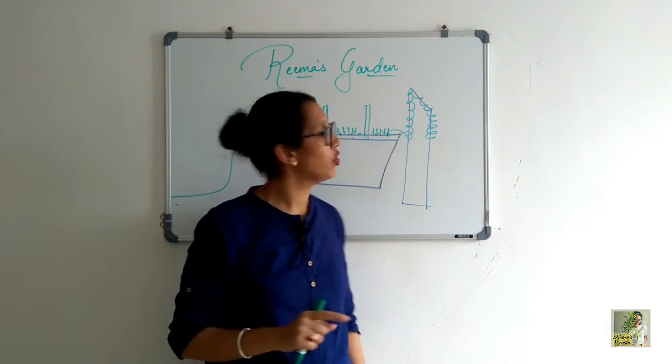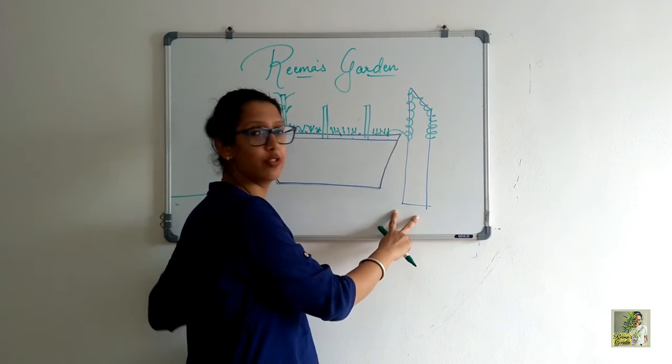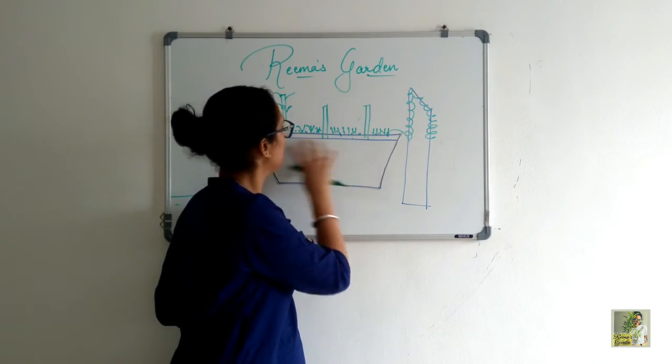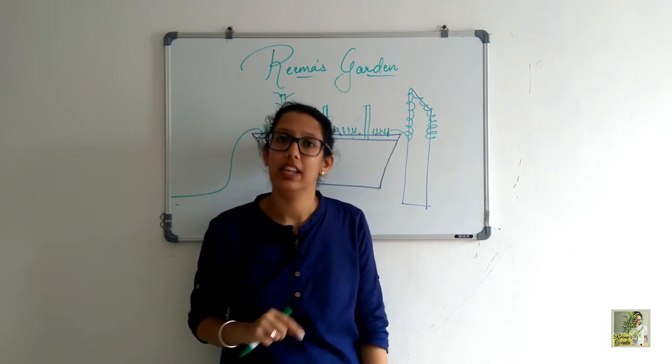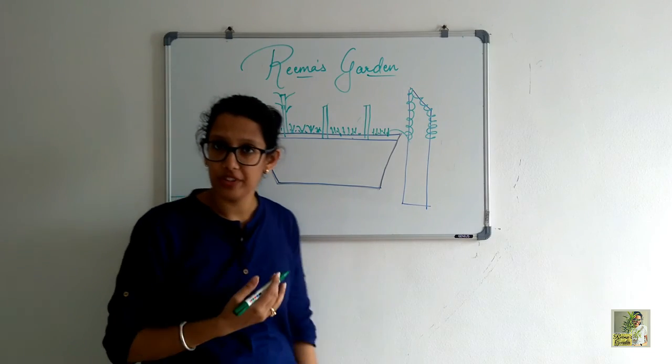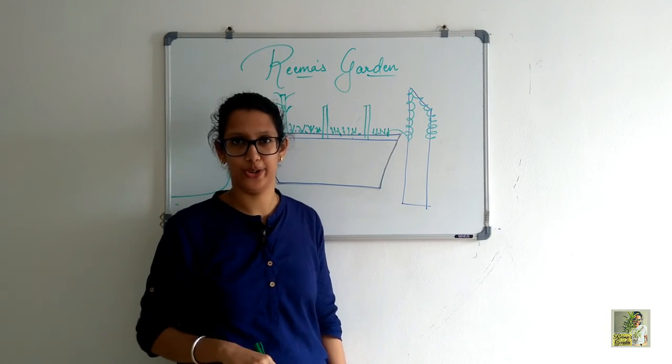So what did you do? In one container, you have two climber or creeper-type plants, three normal plants, and multiple leafy vegetables. You can go on replicating this. So if you have four of these containers, that's a great way to go.